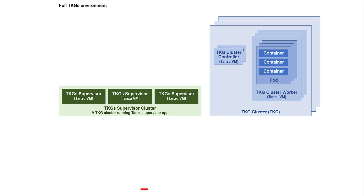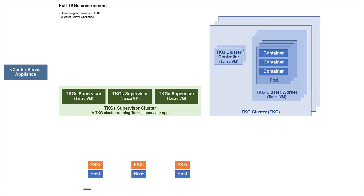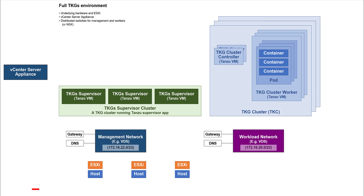Now let's flesh out the other components in a working TKGS environment. Everything runs on VMware ESXi hosts. vCenter Server Appliance, the familiar vSphere GUI, also lets you set up TKG. For TKGS, your networking options are some form of NSX, or at least two VDS subnets. Like the Quick Start Guide, here we will use VDS. One subnet is for a management network, and one for a workload network. This explanation also assumes VDS and subnets are already set up before we begin configuring the TKGS networking.